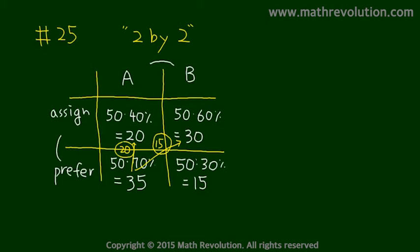15 had been sent to team B. And 15 of the original people who preferred to be in team B went to team B. So what is the lowest possible number of researchers who will not be assigned to the team they prefer?